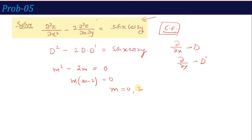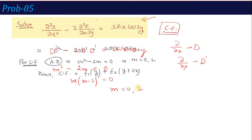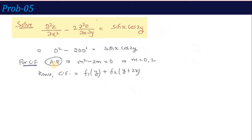Since the roots are distinct, we can directly write the complementary function: CF = f₁(y) + f₂(y + 2x). Here, m = 0 gives the first term f₁(y), and m = 2 gives the second term f₂(y + 2x). This is the simple case of CF calculation.